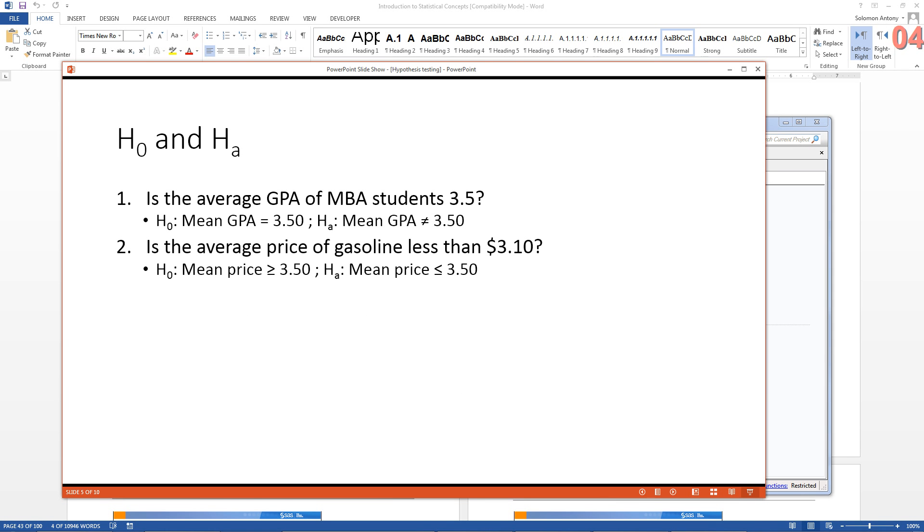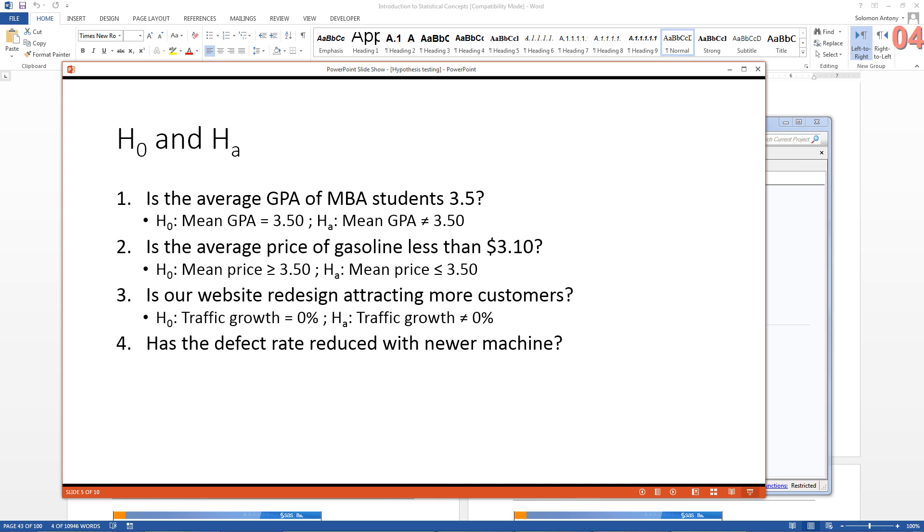With the second question, the null hypothesis would be mean price is greater than or equal to 3.50, and the alternative hypothesis would be mean price is less than 3.50. And the website, you can say traffic growth is zero, or traffic growth is not zero. That would be the alternative hypothesis. Defect rate with the old system is the same as defect with the new system, or defect rate with the old system is not the same as defect rate with the new system. So alternative hypothesis is what we want to prove, and we prove that by rejecting the null hypothesis.